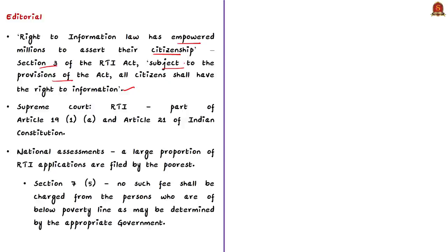In 2004, in People's Union for Civil Liberties versus Union of India, the Supreme Court held that the right to information is a facet of the freedom of speech and expression under Article 19 of the Indian Constitution. Without access to relevant information, people's ability to formulate opinions and express themselves meaningfully is curtailed. The Supreme Court has also recognized RTI as an implied fundamental right under Article 21. As per Section 7, if information is sought for the life or liberty of a person, it shall be provided within 48 hours of receipt of the request.